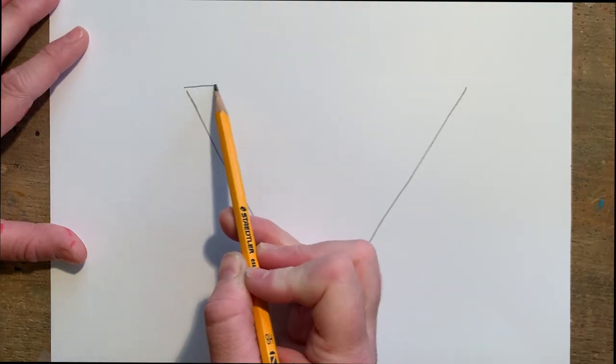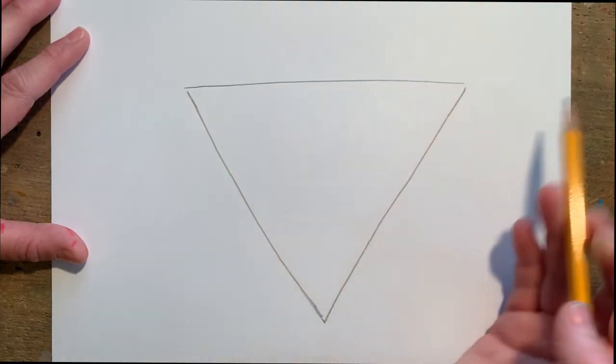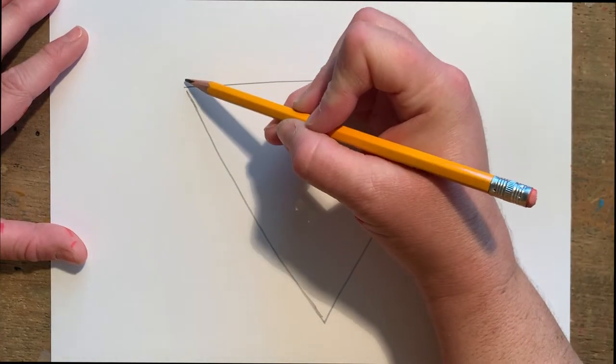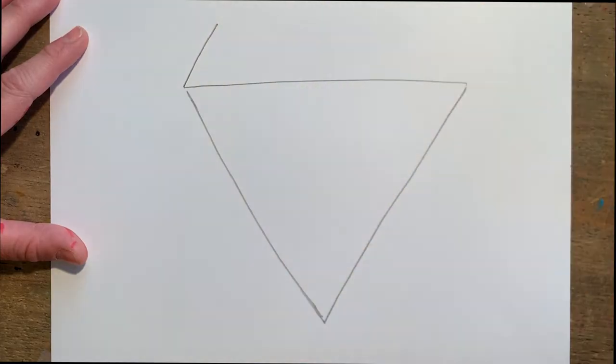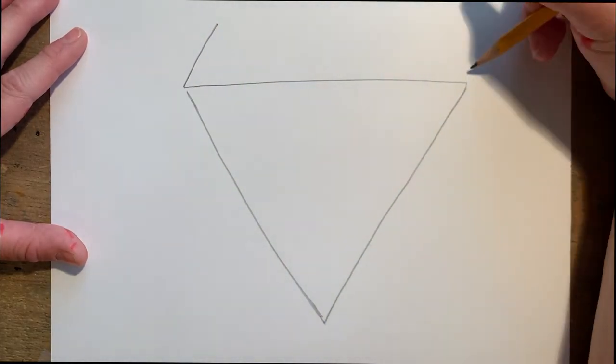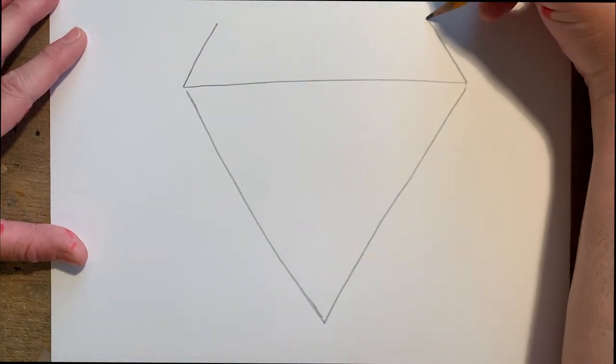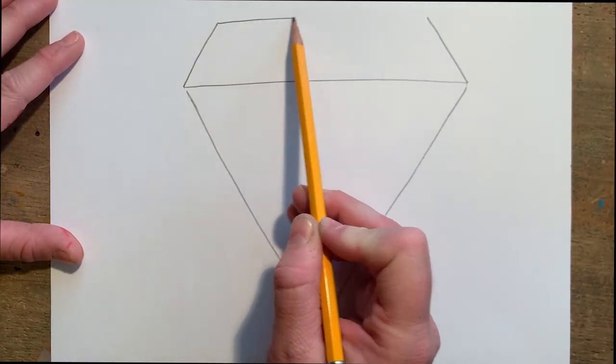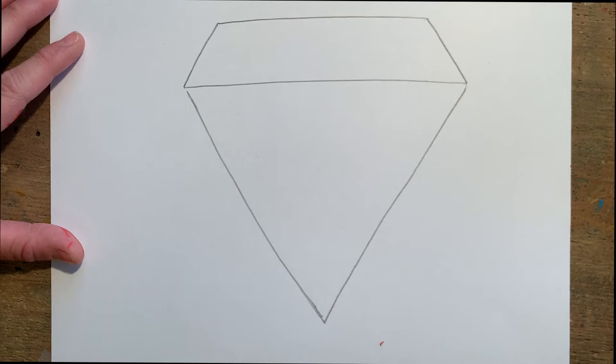On top of each corner I'm going to draw a short diagonal line that angles inward, and then I'm going to connect both of those two with a horizontal line.